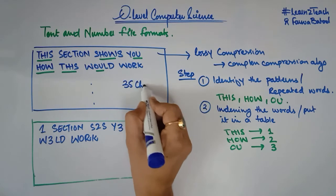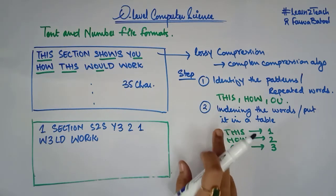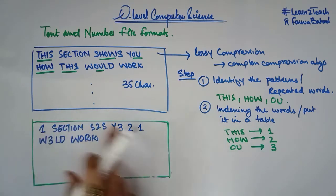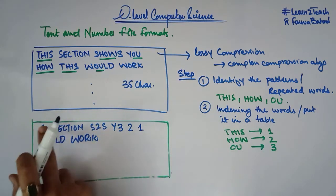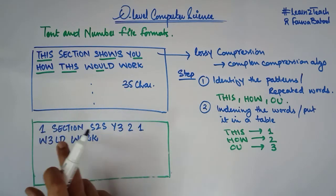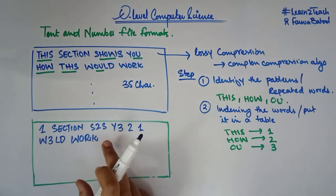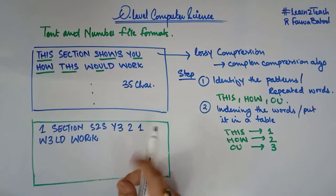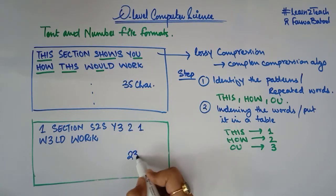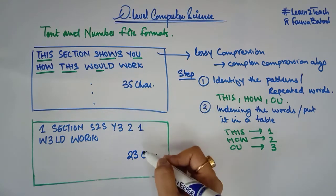After compression, when I have indexed the patterns and replaced the repeated words with index numbers, I count the characters and I am having 23 characters. So in this way we have compressed the file and the number of characters has been reduced.